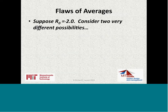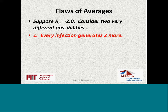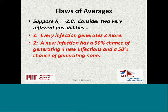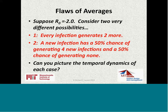Suppose R0 is two. Consider two different possibilities. In option one, every infection generates two more — that's deterministic. In option two, each new infection has a 50% chance of generating four new infections and a 50% chance of generating none. The same R0 equals two: four times one-half plus zero times one-half gives two. Can you picture the temporal dynamics in each case? The R0 is the same — two — but distributionally they're quite different. Number one: the average is also a constant; everyone infects two more.